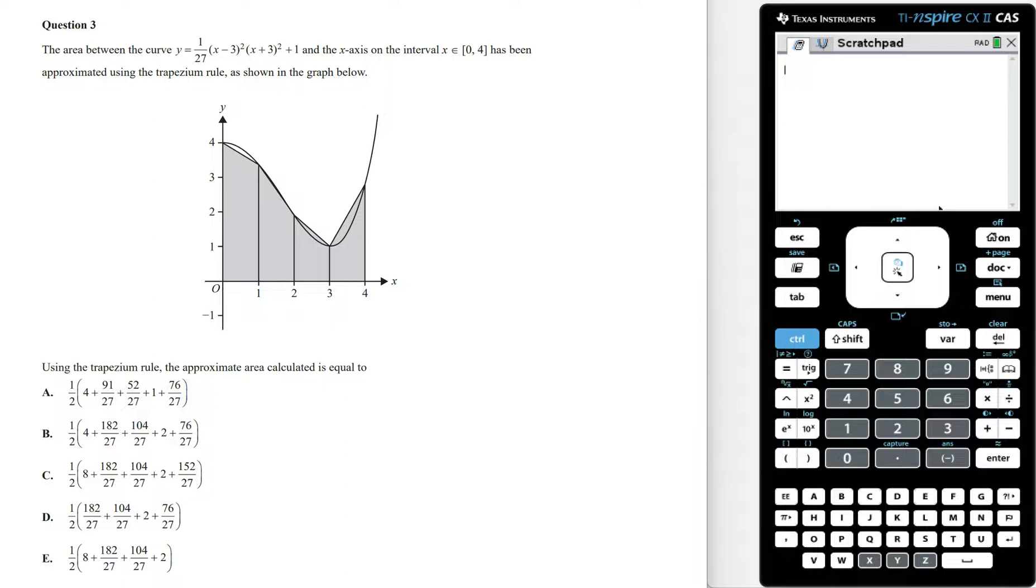Using the trapezium rule, the approximate area calculated is equal to... The trapezium rule is this, where the values of a and b are the endpoints of the interval, and so the value of a is going to be 0, the value of b is going to be 4.